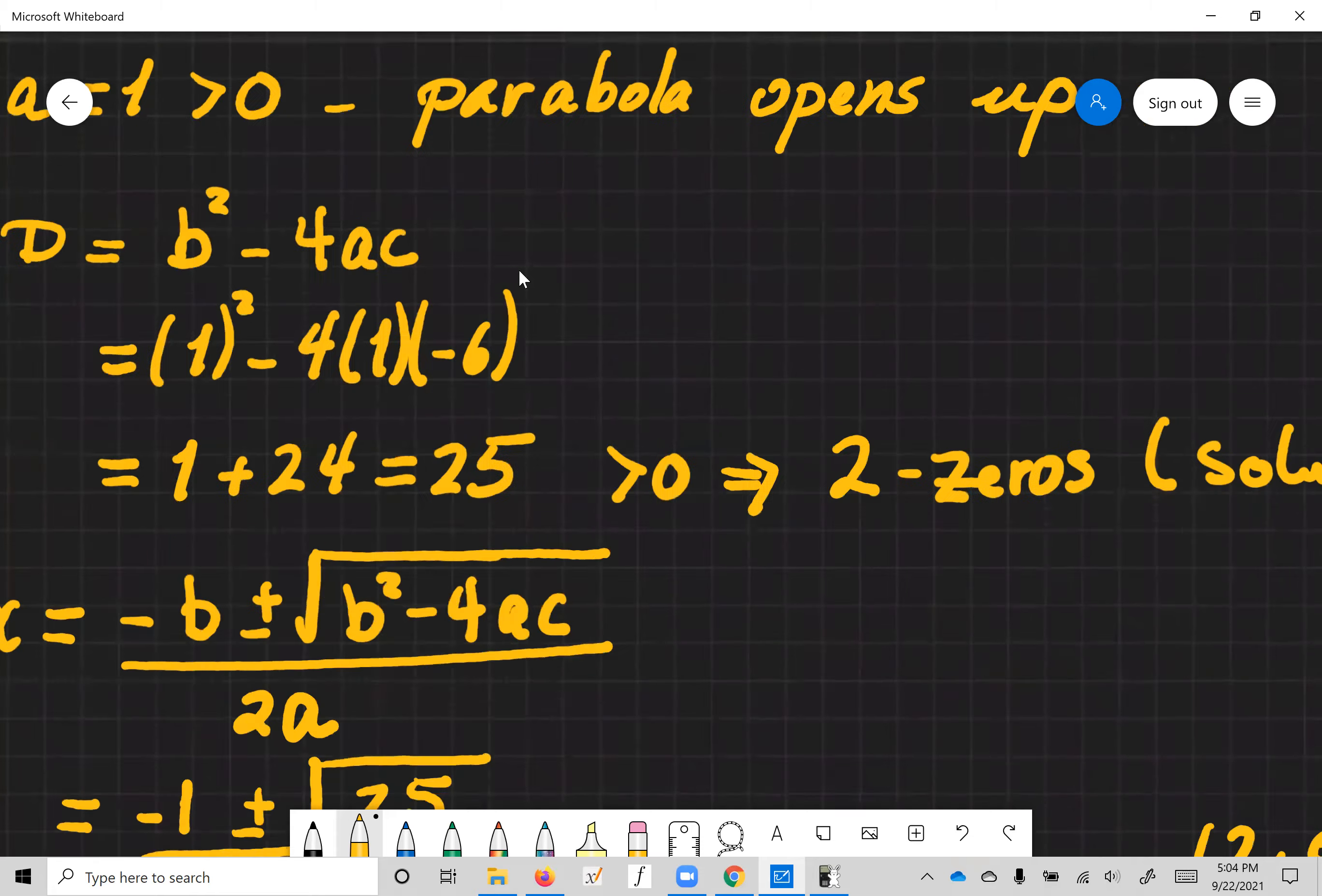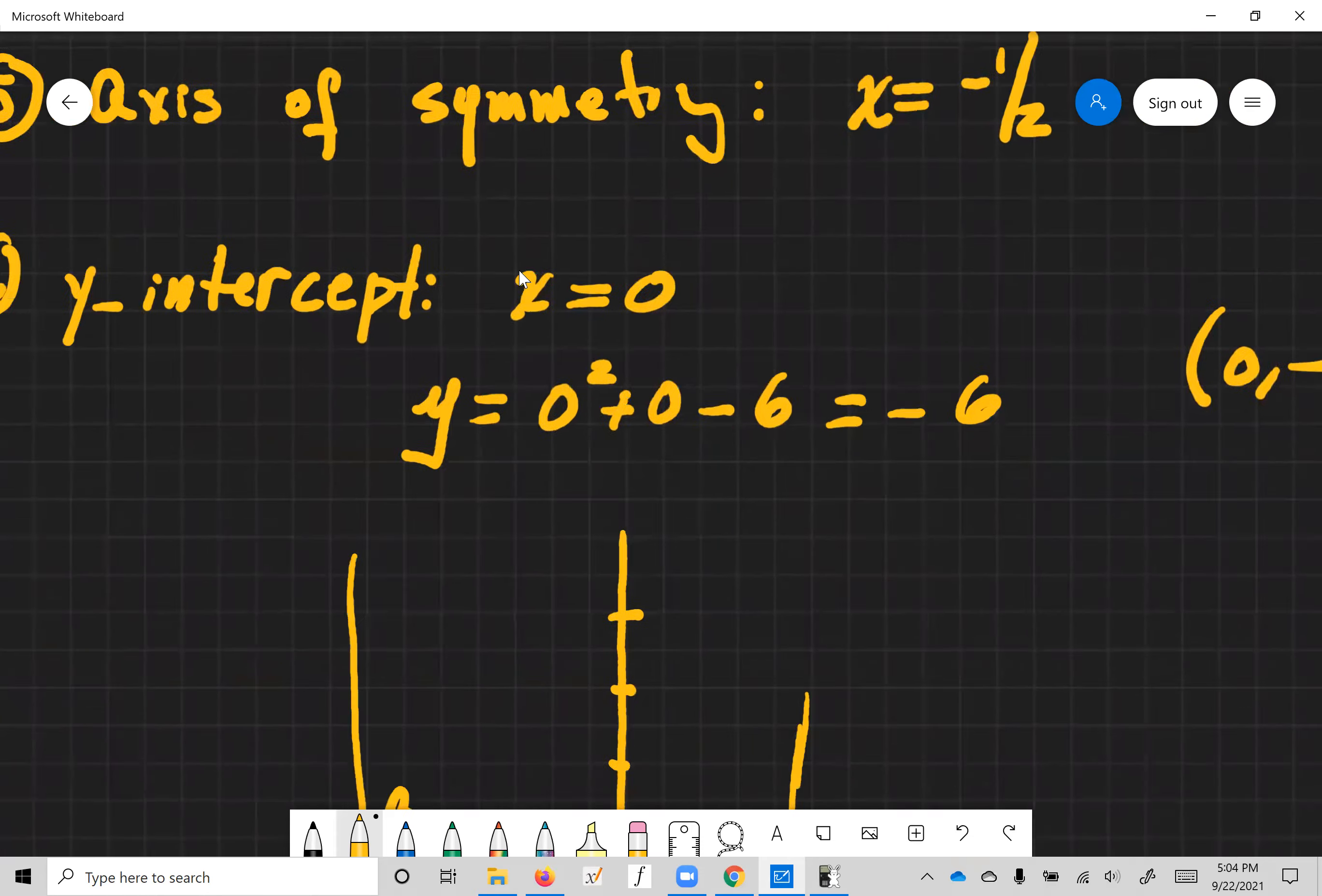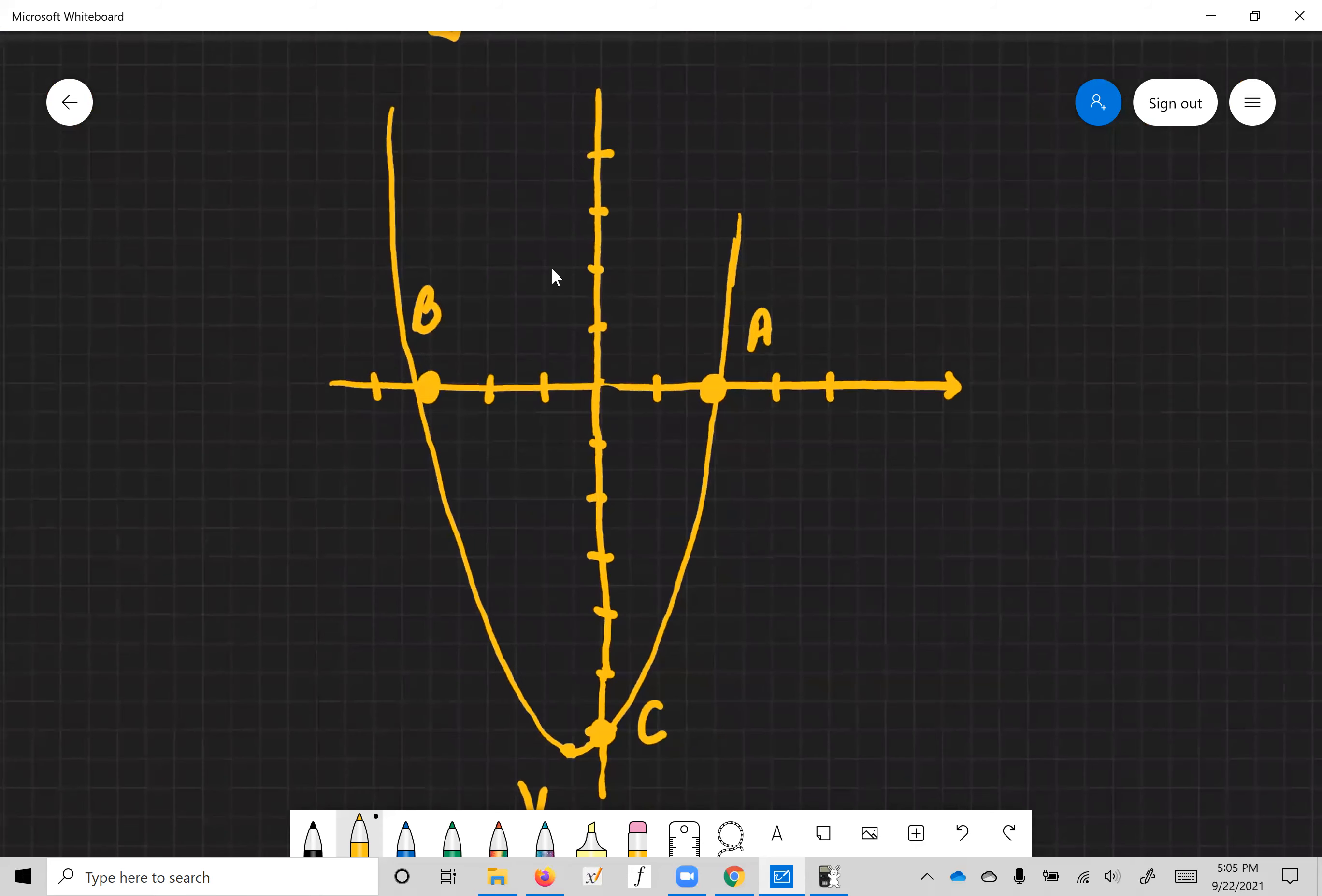So for the y coordinate we get negative six, so the point is zero, negative six. So now it's time to plot them. Here's one of the intercepts, here's the second, here's the y-intercept, and then here's the vertex. This is my parabola right there.